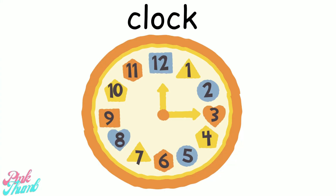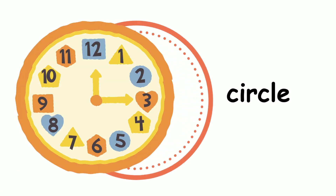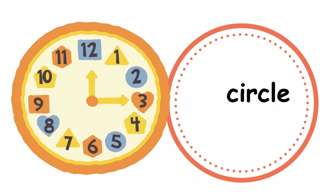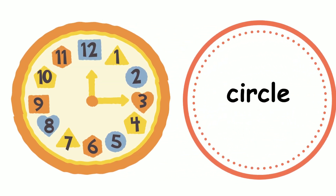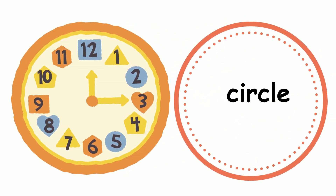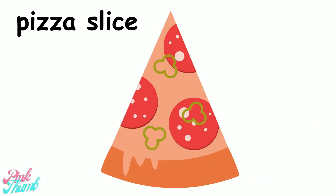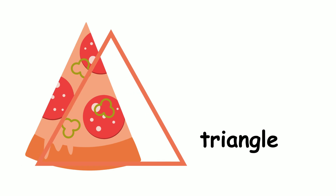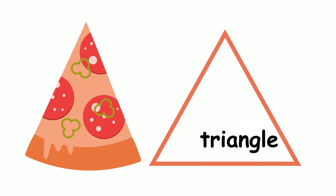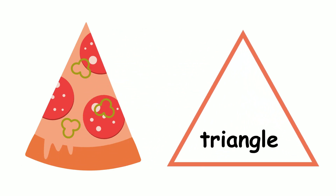What shape is this clock? A circle. What shape is this slice of pizza? A triangle.